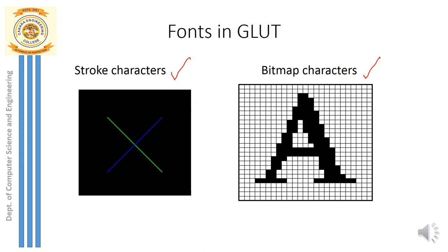For stroke characters, if I want to display the letter A, I use lines to draw it. For bitmap characters, the display window is divided into a grid where each block represents a pixel. Each pixel is treated as a bit: when not selected it is 0, and when selected it is 1. A character is displayed using a series of bits — a bit pattern.